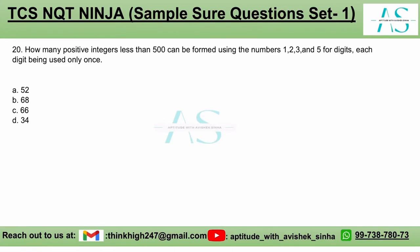How many positive integers less than 500 can be formed using the numbers 1, 2, 3 and 5 for digits, each digit being used only once? That is, repetition of digits is not allowed.